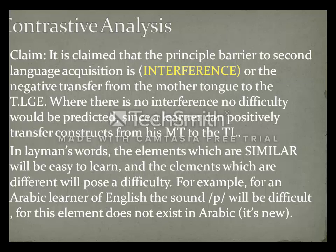You will find an Egyptian speaking English using /b/ instead of /p/ — for instance, saying 'barking' instead of 'parking'. In English, /p/ and /b/ are not allophones; they are phonemes, meaning they are contrastive and cause a change in meaning. 'Park' and 'bark' have completely different meanings. That's why this mistake persists — probably due to fossilization, which we will address in error analysis.